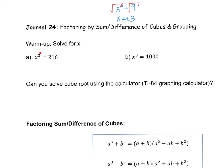If you have a cube or x to the third power, you do the same thing — you have to take a root, but this time it's not a square root, it's a cube root. So I have to take the cube root of the other side as well. The 3 here and the 3 here cancel each other, so x comes down. I also have to take the cube root of 216, which is asking what number multiplied 3 times gives me 216. The answer is 6.